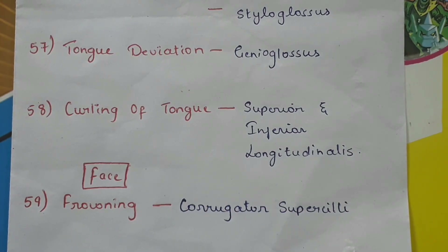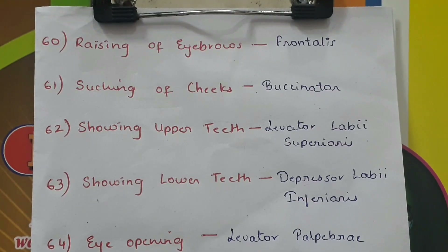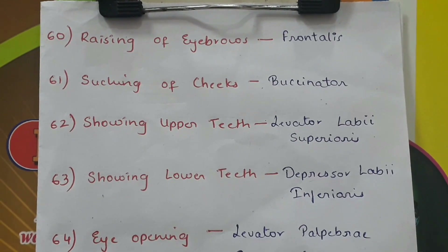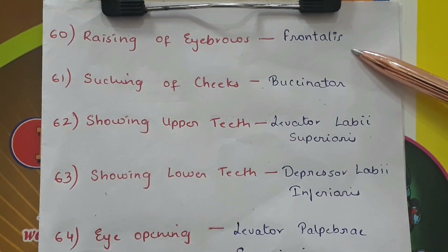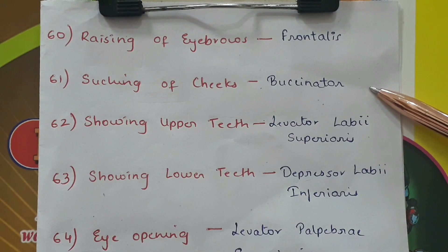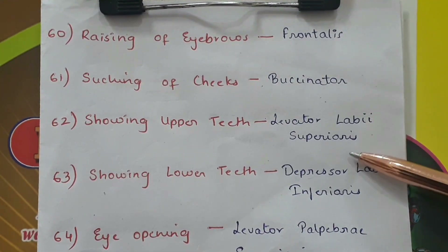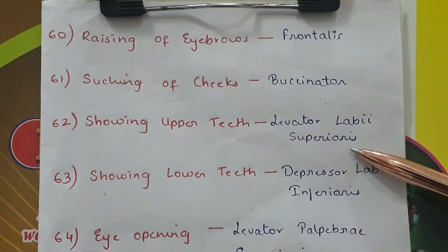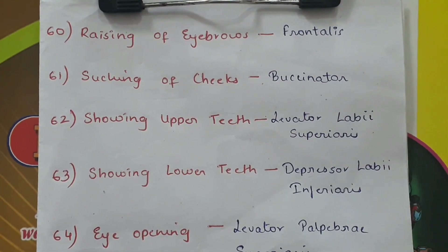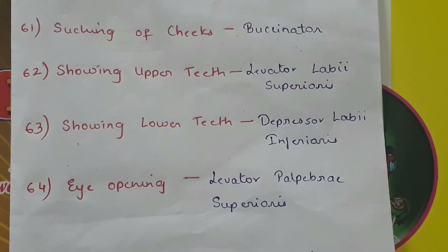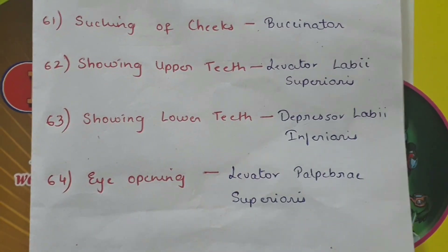In the face, frowning by the corrugator supercilii. Raising of the eyebrows by the frontalis muscle, also called the occipitofrontalis. Sucking of cheeks inwards by the buccinator. Showing the upper teeth by levator labii superioris. Showing the lower teeth by depressor labii inferioris. Eye opening by levator palpebrae superioris.